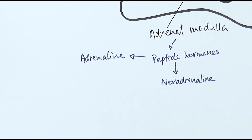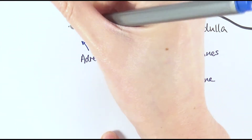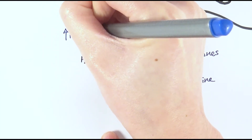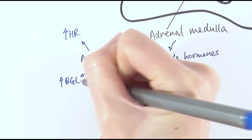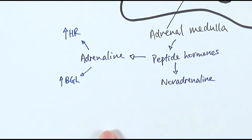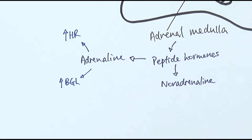Even though adrenaline and noradrenaline sound very similar and both share a base of adrenaline, they do slightly different things, though both contribute to stress responses. Adrenaline specifically can do two things: it can increase the heart rate — how quickly your heart beats — and it can increase your blood glucose level to make sure your organs get more glucose for respiration and energy.